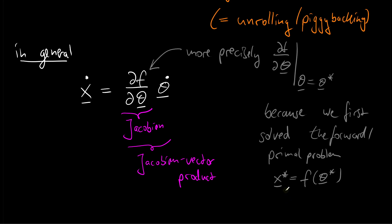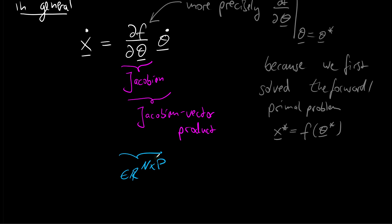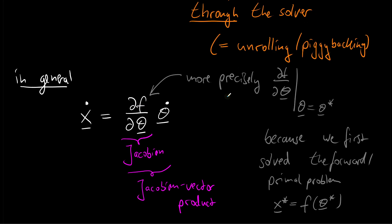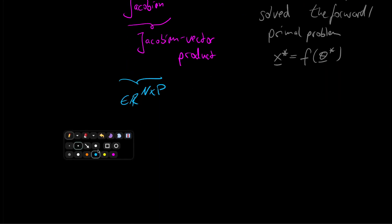We first solve the forward or primal problem — we query function f at a concrete value of theta and get back a concrete value of x, which we assume has converged. The Jacobian df/dtheta is n×p dimensional, and multiplying it with the p-dimensional tangent theta_dot gives an n-dimensional output tangent — the correct shape. If we naively applied forward mode AD through the solver, this is exactly what our AD engine would give us, but now we want an alternative expression via the total derivative of the optimality criterion.